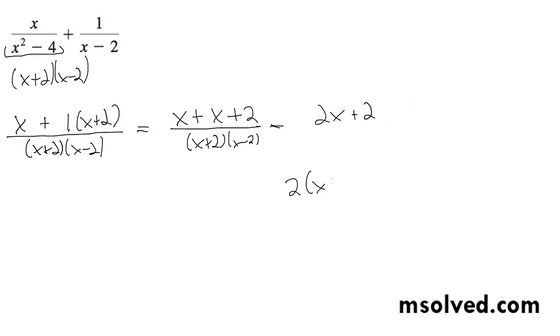You can reduce this down to 2(x+1) over (x+2)(x-2). That's it.